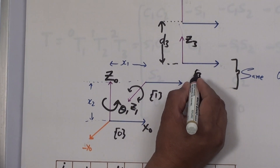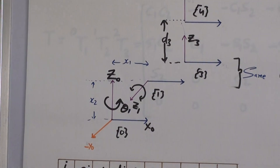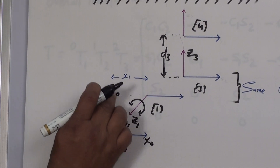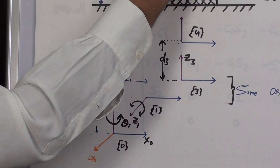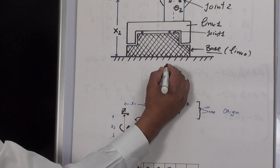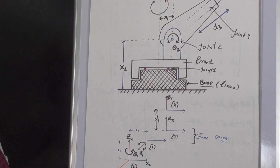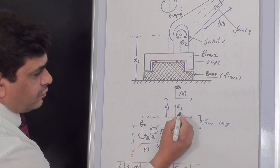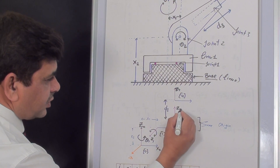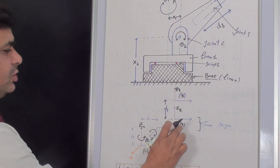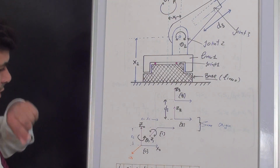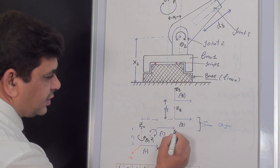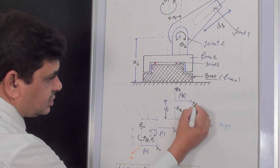We are assigning the z-frame coordinates where rotation is around the z-axis for revolute joints, and the approaching vector for the prismatic joint is denoted as z4. The origin of frame one and frame two are at the same region. We then assign the x-axis: x0 is aligned with x1, x2, and x3 in order to place this manipulator at the home position.